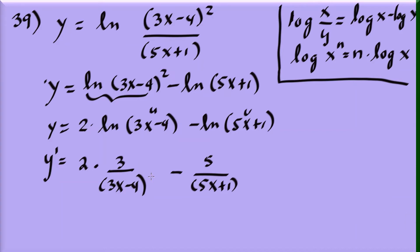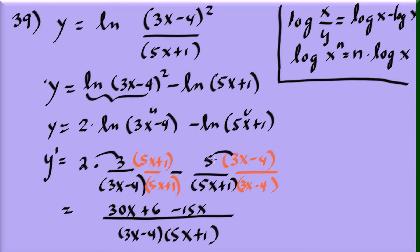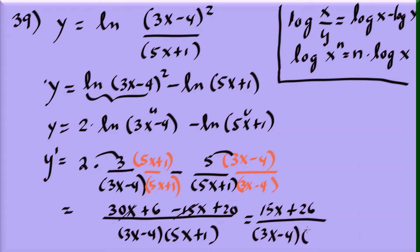Combine the two fractions by cross-multiplying to get the common denominator (3x minus 4)(5x plus 1). The numerator: 6 times (5x plus 1) gives 30x plus 6, minus 5 times (3x minus 4) gives 15x minus 20. So the numerator is 30x plus 6 minus 15x plus 20, which simplifies to 15x plus 26. Final derivative: (15x plus 26) over (3x minus 4)(5x plus 1).